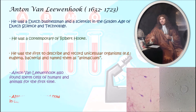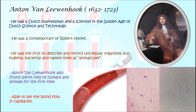Anton van Leeuwenhoek was a Dutch businessman and scientist in the golden age of Dutch science and technology. He is commonly known as the father of microbiology. He was the first to describe and record living single-celled organisms like Euglena and bacteria, naming them animalcules. He made use of a microscope with improved lenses and also found sperm cells of humans and animals for the first time, and was able to see blood flow in capillaries.